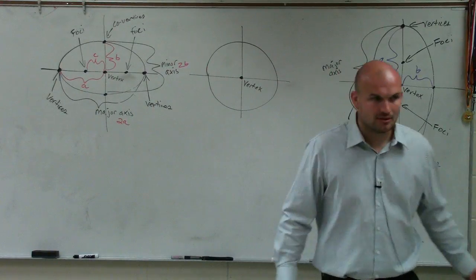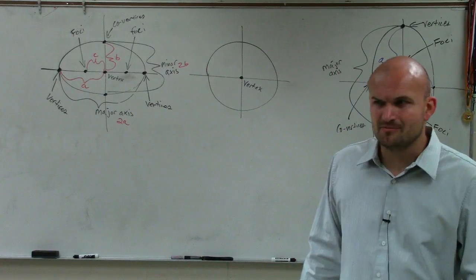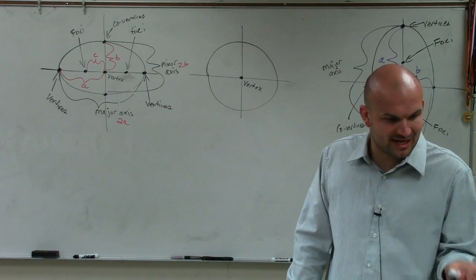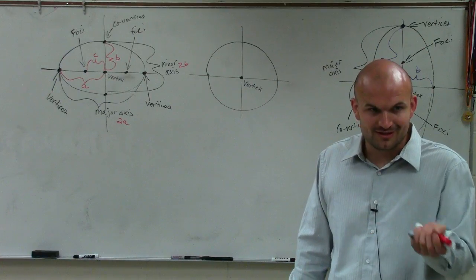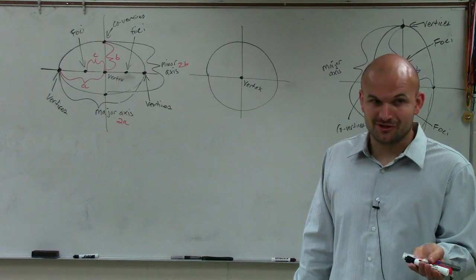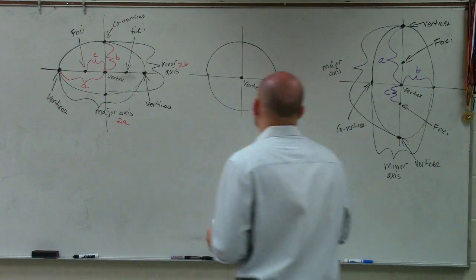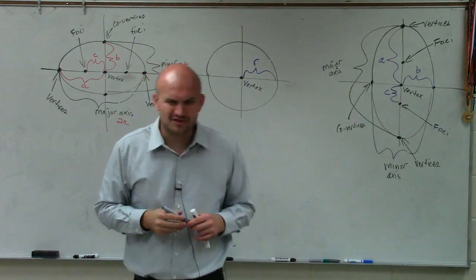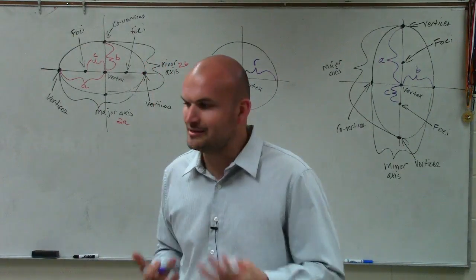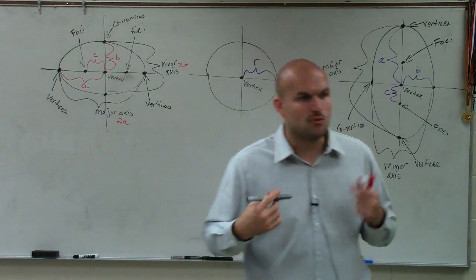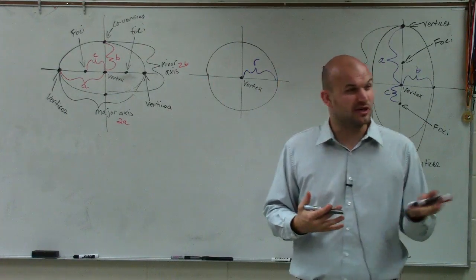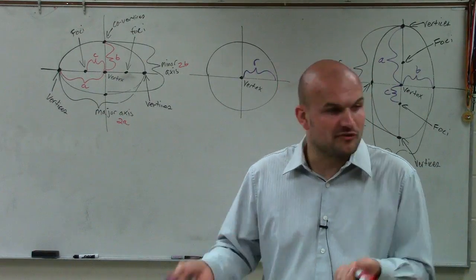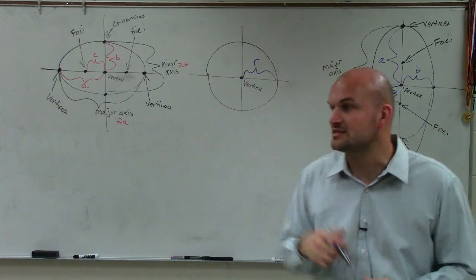On a circle, there's really no difference between A and B — it's the same length. So the distance from the vertex to any point on a circle we call R, the radius. A circle is included within the category of ellipses because it comes around the same point. We'll talk more about what happens with the focus for a circle, but the vertices and co-vertices are all the same — they're all points that are equal distance from the center.